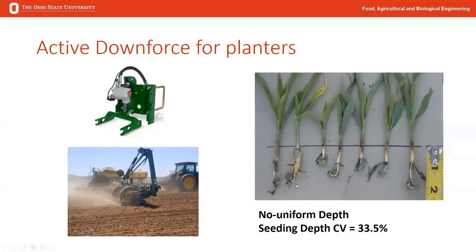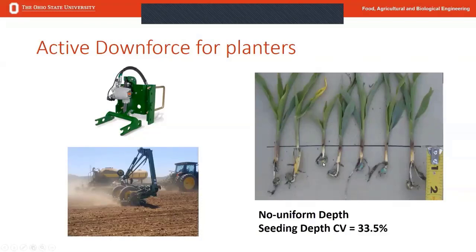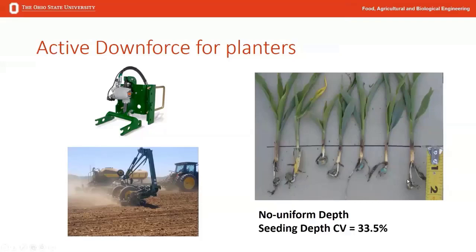On the right side here are some corn plants pulled from mechanical springs that used to maintain downforce. You can see very quickly that from seed to seed there can be quite a bit of difference in depth — from almost two inches deep to less than an inch deep. When you couple that with active downforce, you would see a very uniform seed placement, which is very important for uniform crop emergence. Active downforce can pay, though it can be costly — it definitely pays back considering the conditions planters face in the spring.